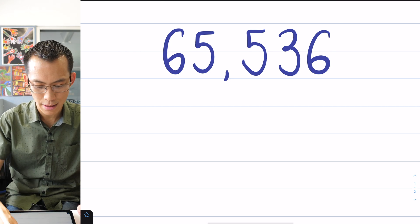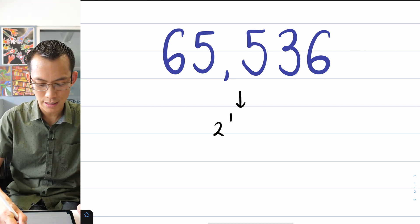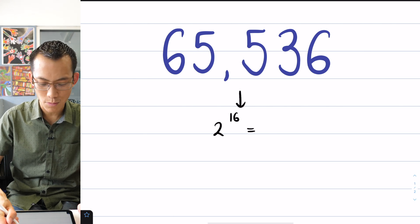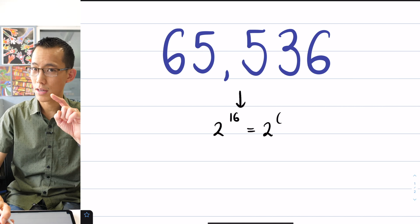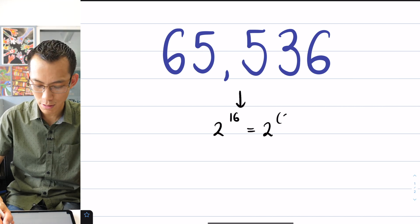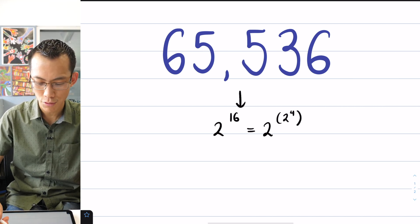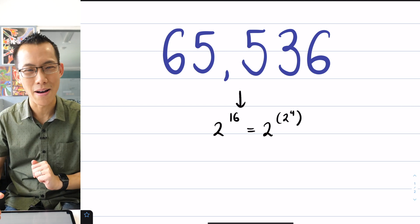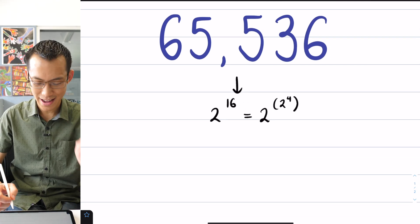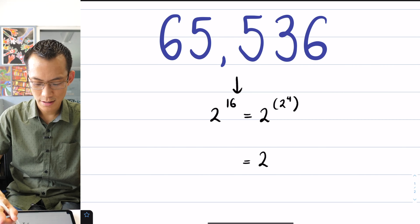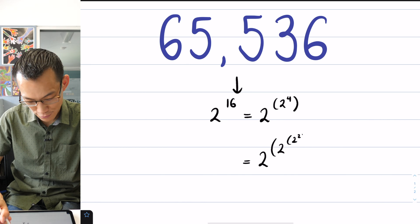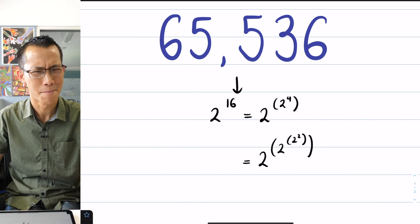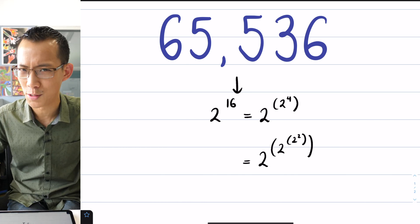So I can write this as 2 to the power of 16, but I can also write it as 2 to the power of—well, 16 is 2 to the power of 4. So I can write it as 2 to the power of 4, but 4 is also a power of two. It's 2 squared. So therefore, I can write this as 2 to the power of 2 to the power of 2. I think I said the right number of twos there. It's very confusing on Tuesday Tuesday.